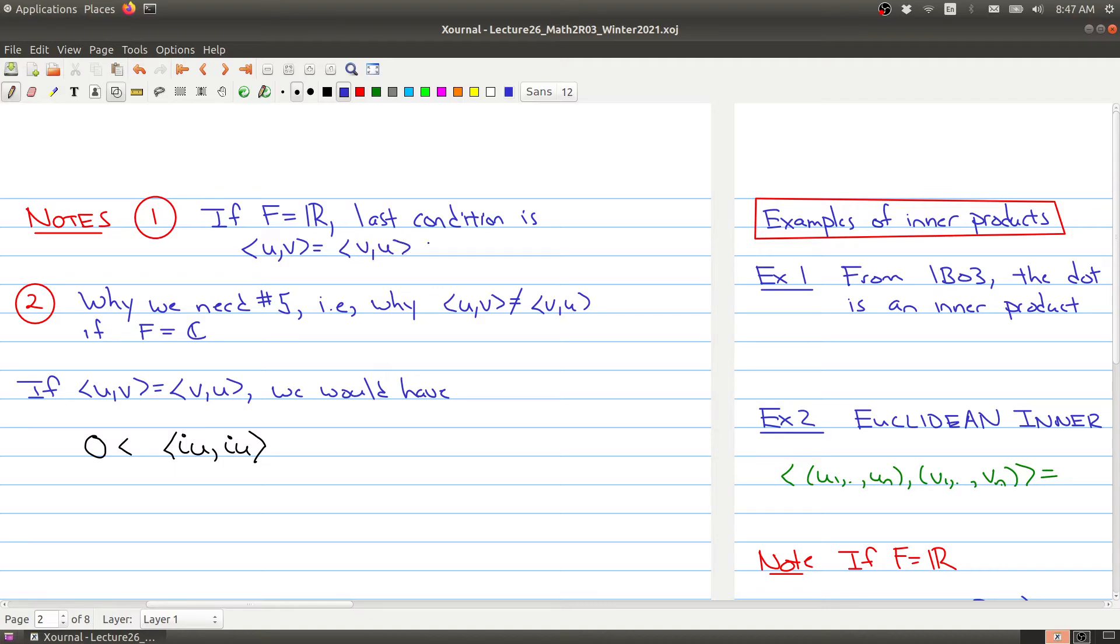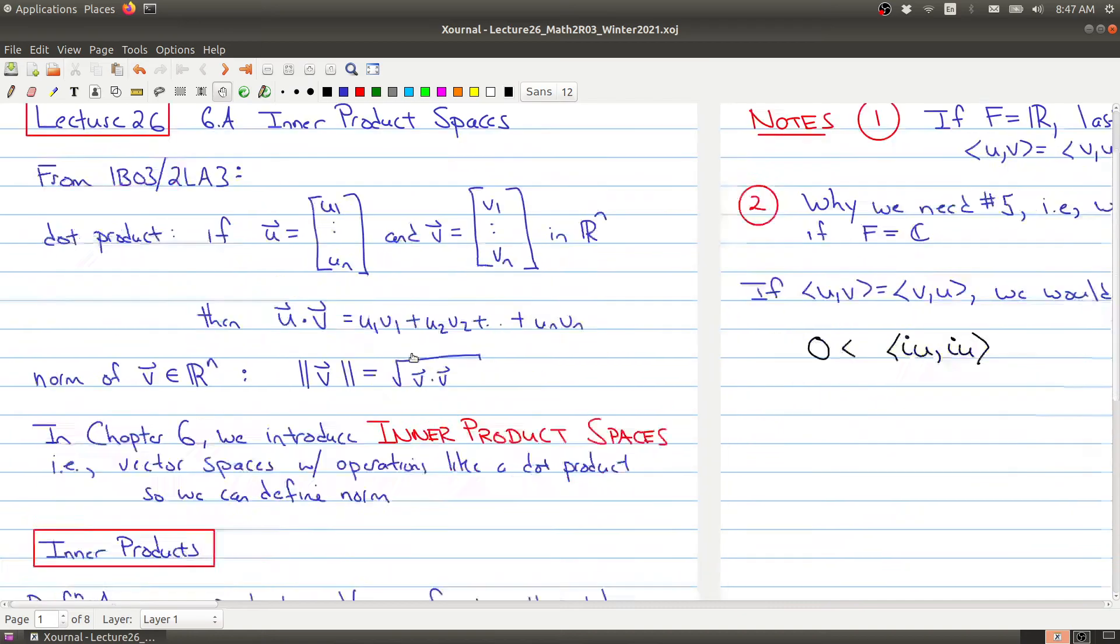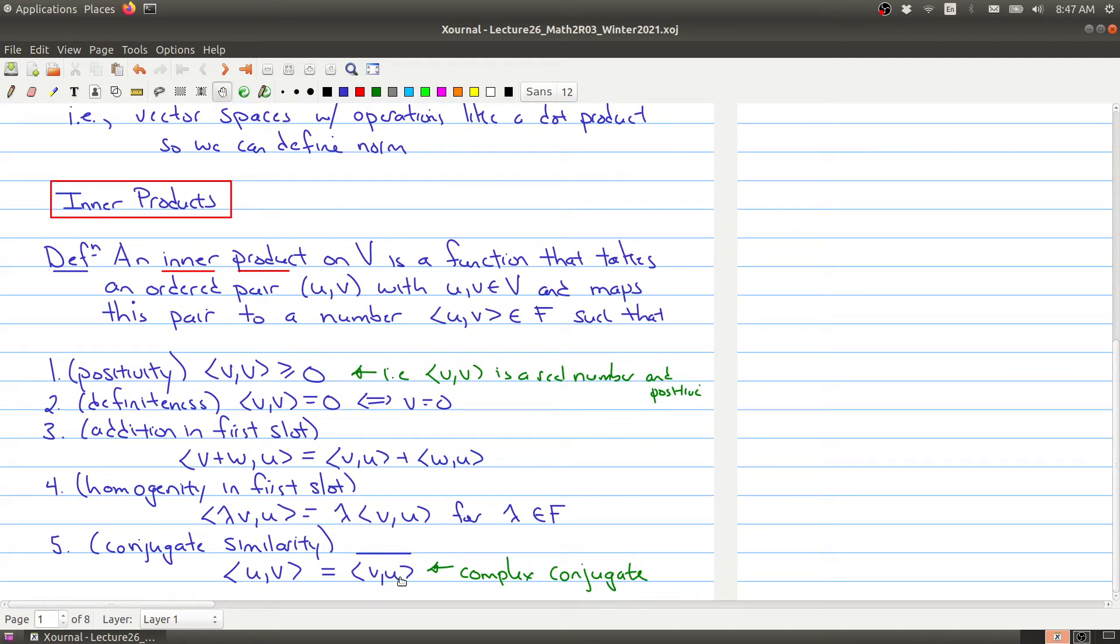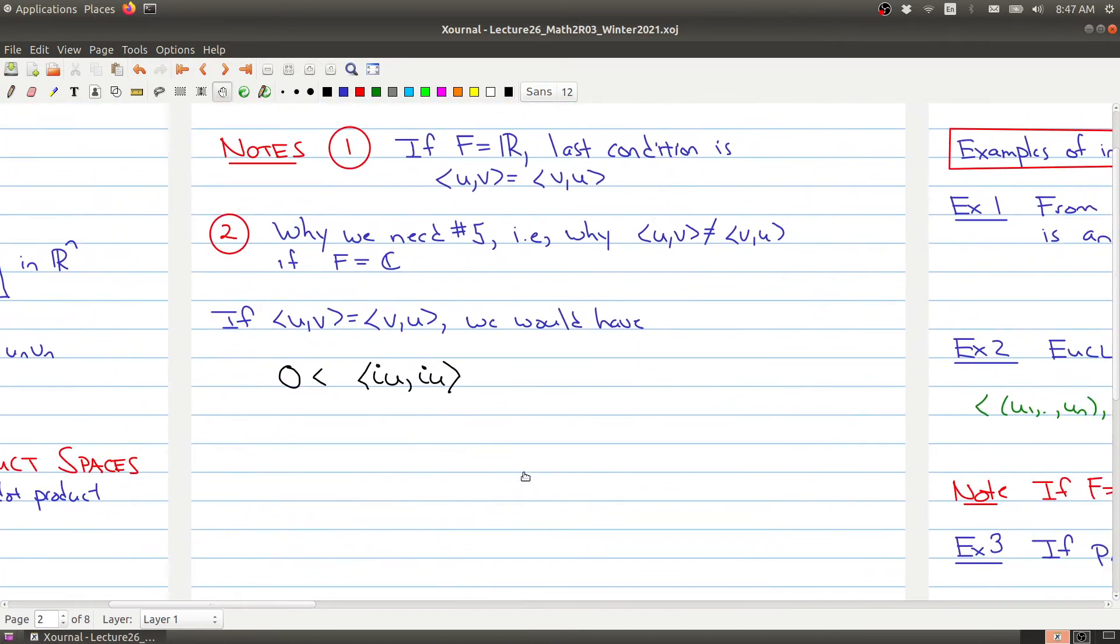Let me just show you the last condition again. The last condition was that when you switch the order around, you get the complex conjugate. But because this is a real number, the complex conjugate of a real number is just that number itself. So that's why that's true.